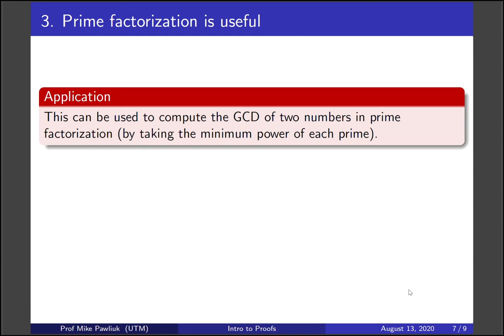So as an application of this, this can be used to compute the GCD of two numbers that are already given to us in prime factorization by taking the minimum power of each prime. So the previous one was for one prime power, but you can also do this if you have numbers that are written as products of primes.